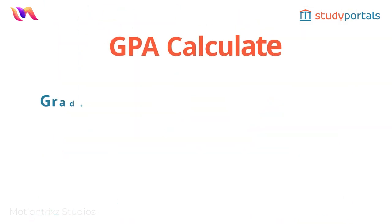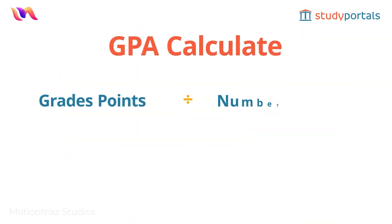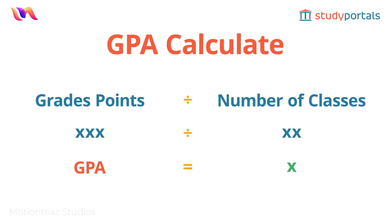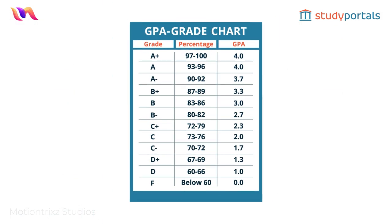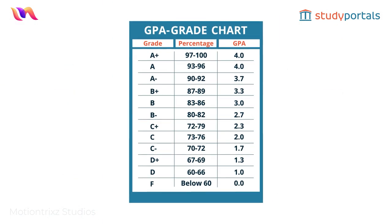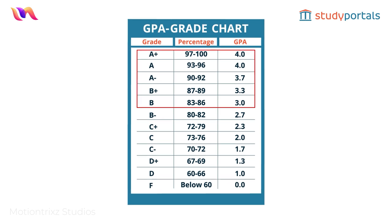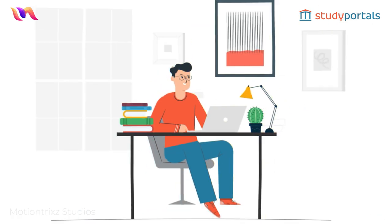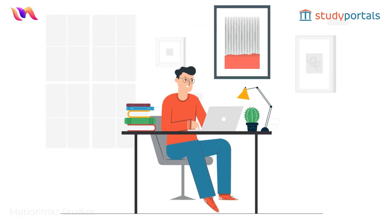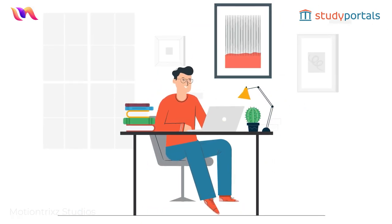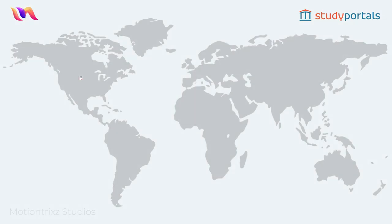To calculate your GPA, you add up the points for all your grades and divide by the number of classes you took. A good GPA is generally considered to be 3.0 or higher, but it's important to check with the specific university and program you're interested in.